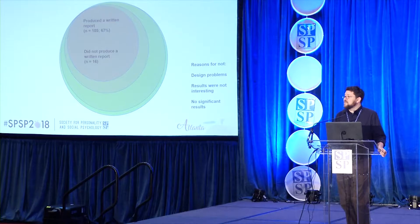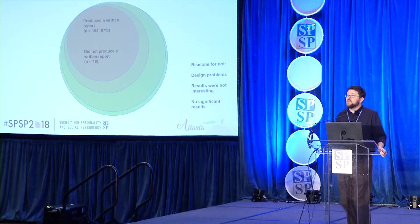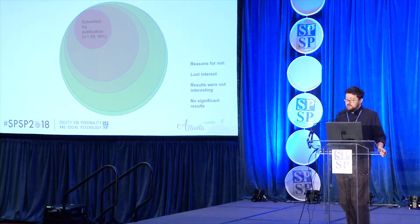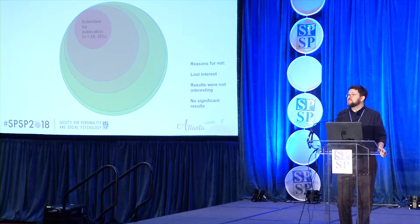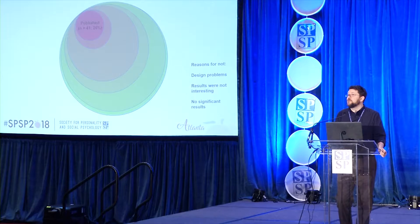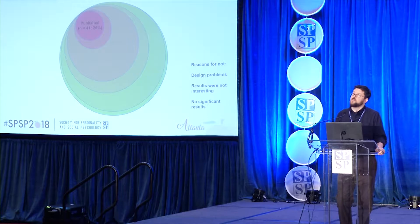Cooper and colleagues also probed people about why studies fell out at different phases. Common answers included design problems—identified after the results were known—and that results were not interesting or not statistically significant. Of the 105 written reports, 55 were submitted for publication. Some were not submitted because results were not interesting, not statistically significant, or because students and investigators lost interest. Of those 55, finally 41 actually appeared in print. Reasons for non-publication again boiled down to results not being interesting, no statistically significant results, and—after results were known—design problems.